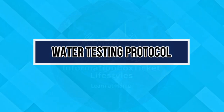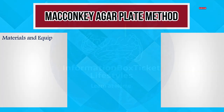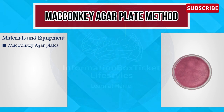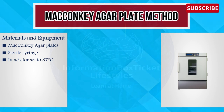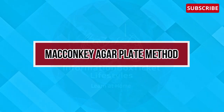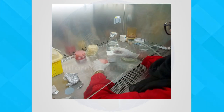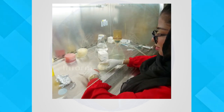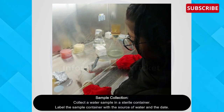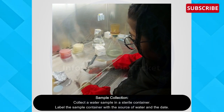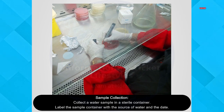Now let's begin with the procedure of water testing. The first test is the MacConkey agar plate method. Let's start with water testing through the MacConkey agar plate method. Ensure the MacConkey agar plates are sterile and ready for use. Collect a water sample in a sterile container. Label the sample container with the source of water and the date, and make sure to label the plates as well with the date and water sample name.